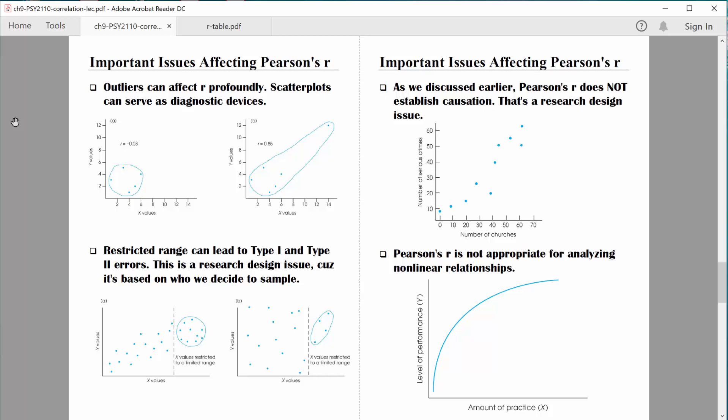First though, let's talk about some important issues that can affect that Pearson correlation. Outliers are an important thing that can affect a correlation coefficient, particularly if the sample size is relatively small. Remember, when the sample size is small, one outlier can really have an effect on all that data. Check out this situation. Scatter plots can work really well just to get a sense of what your data looks like.